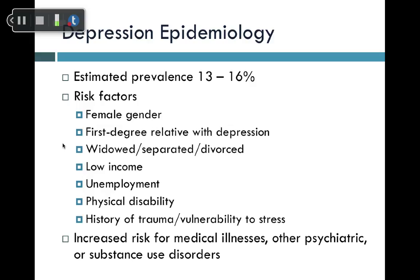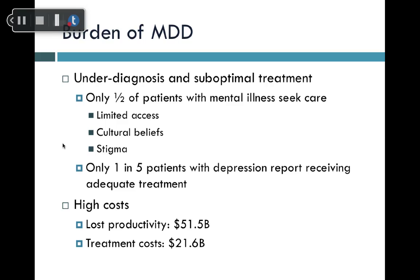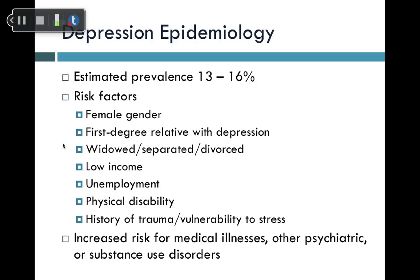The estimated prevalence of depression is between 13% and 16%. Risk factors include female gender, a first-degree relative with depression — indicating a biological component — being widowed, separated, or divorced, low income, unemployment, physical disability, and a history of trauma. People with depression are also at increased risk for developing medical illnesses and other psychiatric or substance use disorders.